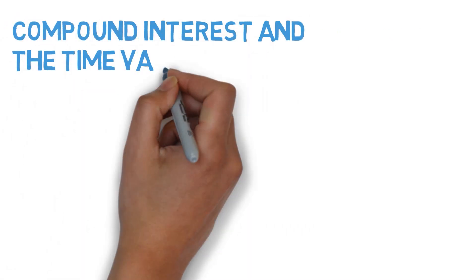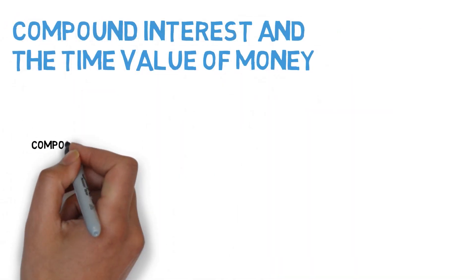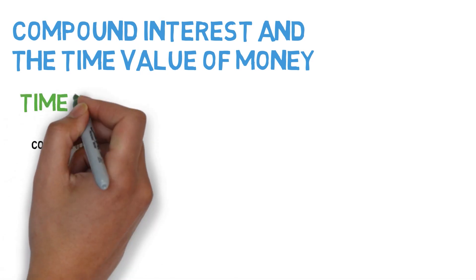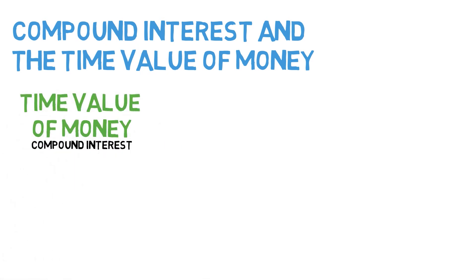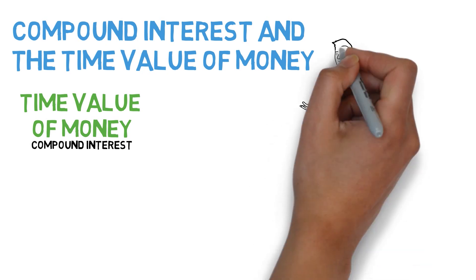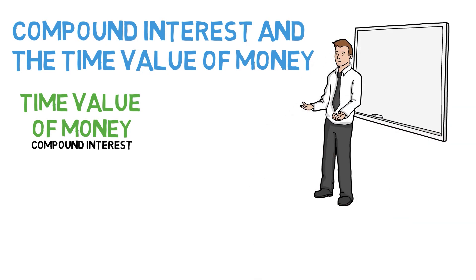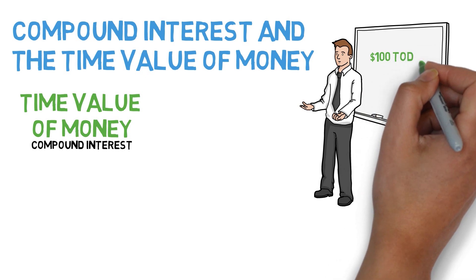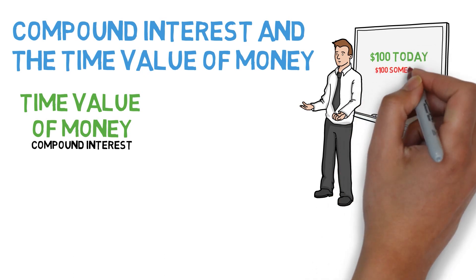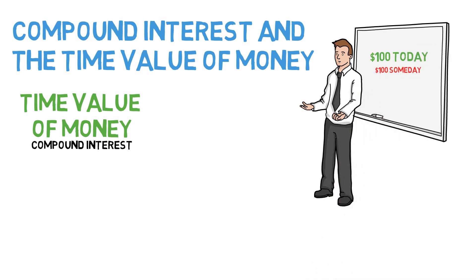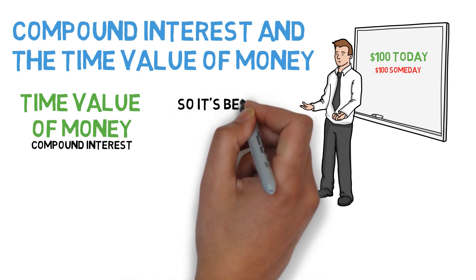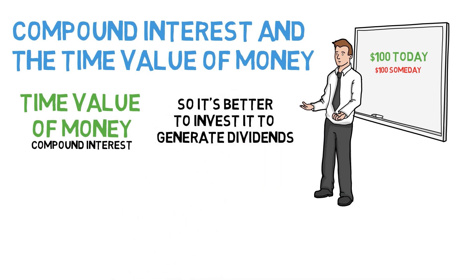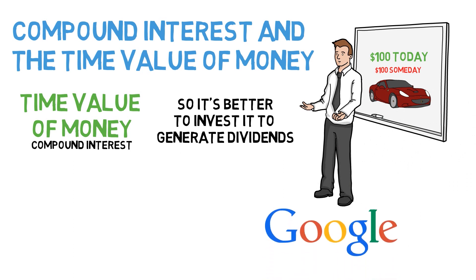Compound interest and the time value of money. The concept of compound interest is the foundation of the time value of money, which states that the value of money changes to a person depending upon when it's received. Earning $100 today is more preferable to earning $100 several years from now. If you have it in your hand immediately, you can invest it to generate dividends and interest income, and later spend it on things you want.